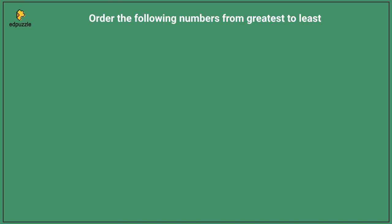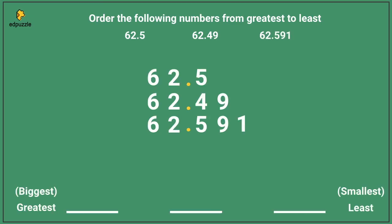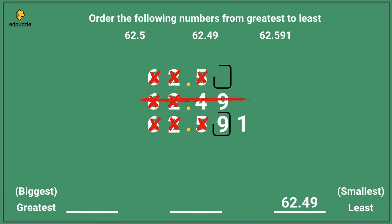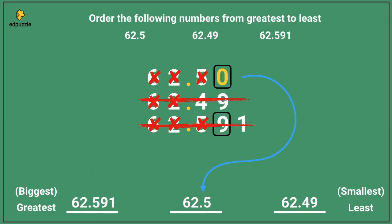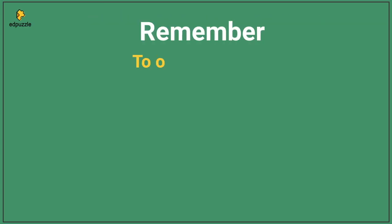Here is your last one. Order the following numbers from greatest to least: 62.5, 62.49, and 62.591. If you stack these numbers, the 6s are all the same and the 2s are all the same. But then this 4 is smaller than the 5s, so 62.49 must be smallest. Next, when we add a placeholder 0, we can compare the 9 and 0, and see that 9 is larger, so 62.591 must be larger. Therefore, my correct order is 62.591, 62.5, and then 62.49. From today, remember: to put decimals in the correct order, just line them up and compare each number.